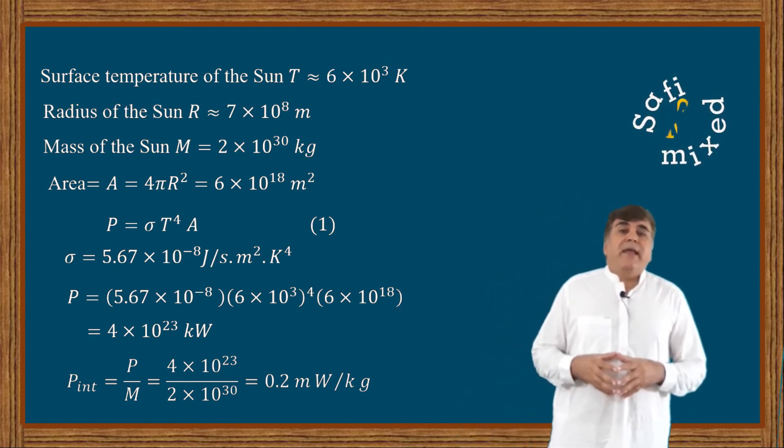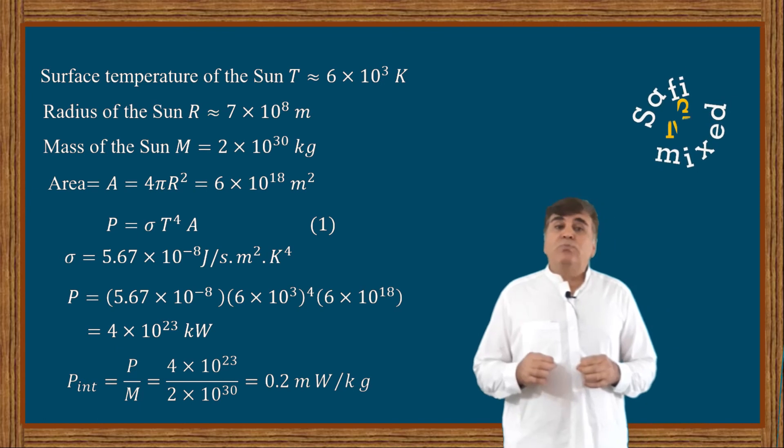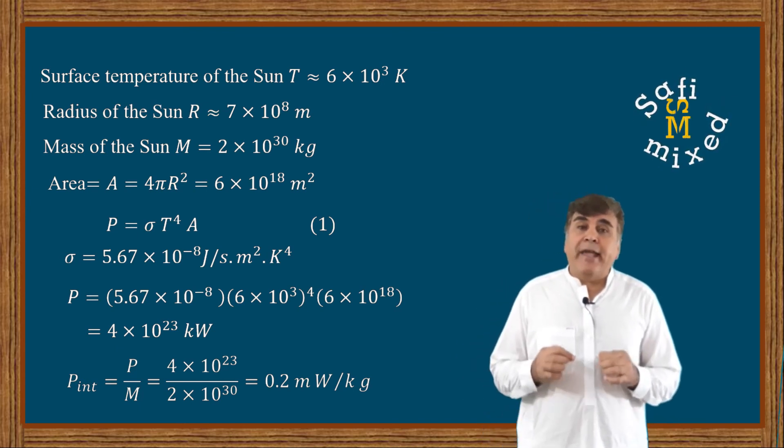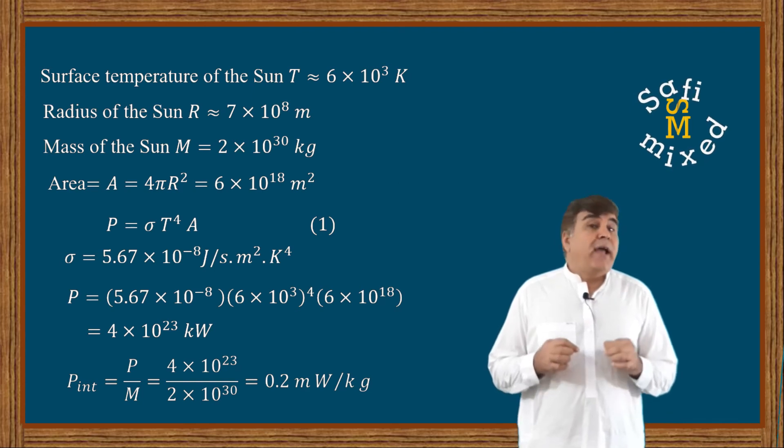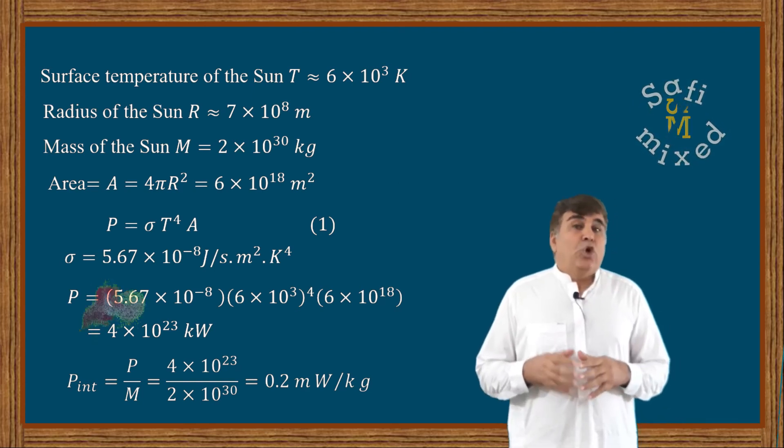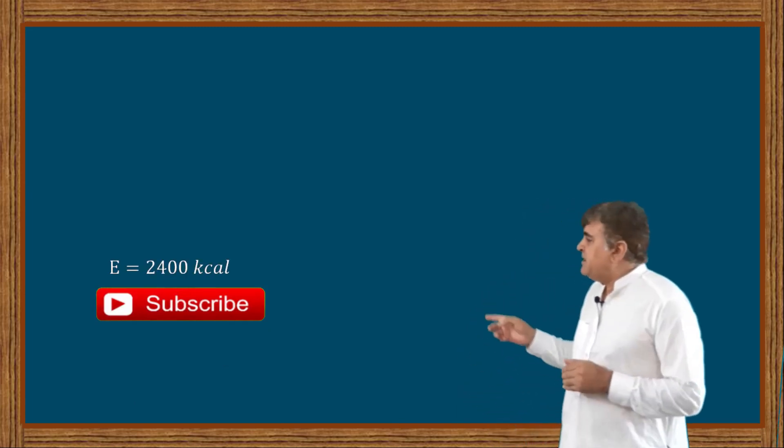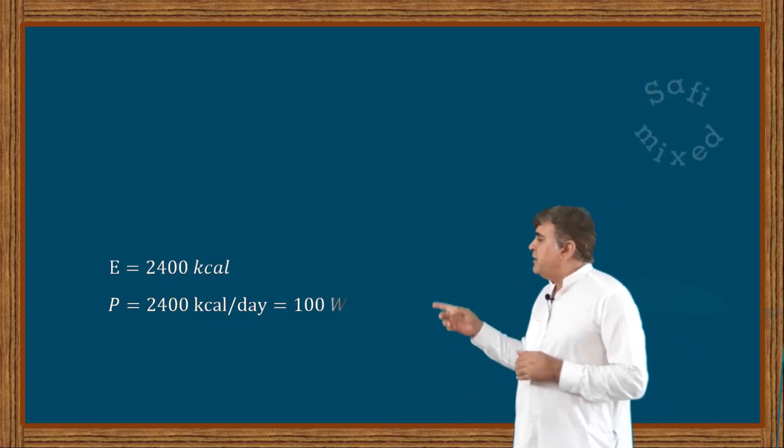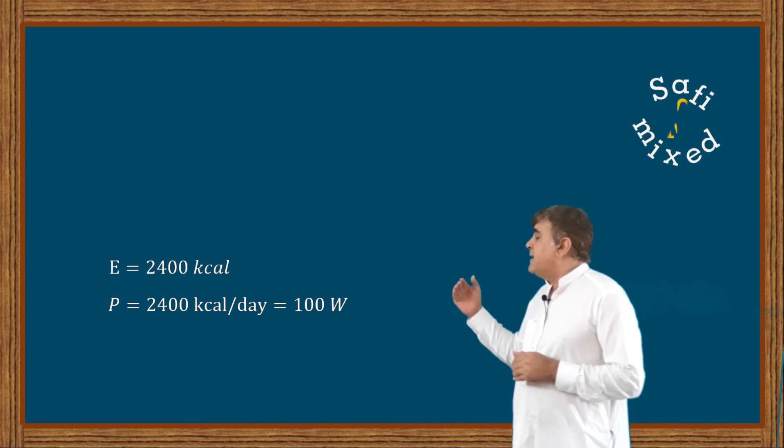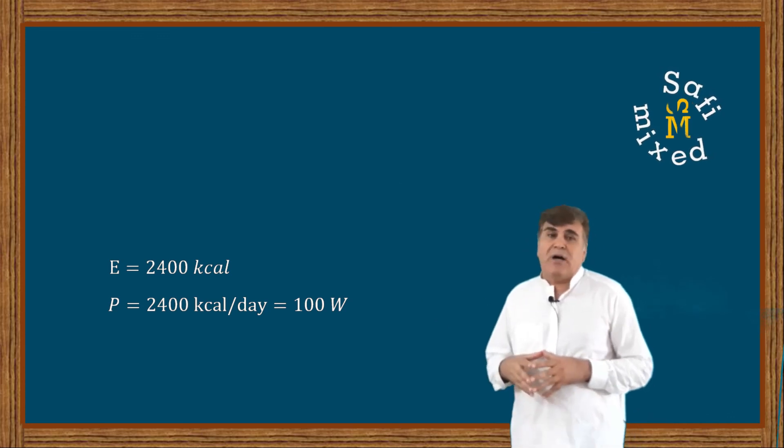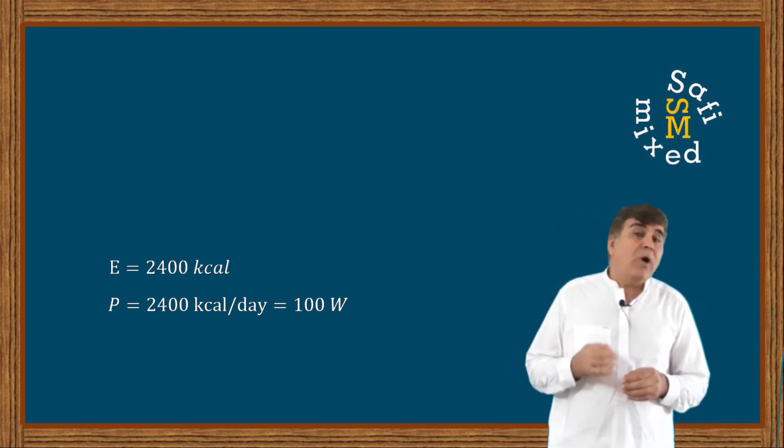On the other hand, an average human being consumes energy around 2400 kilocalories every day, which converting this into power becomes P = 2400 kcal/day. Substituting the values, we can write this power as 100 watts.